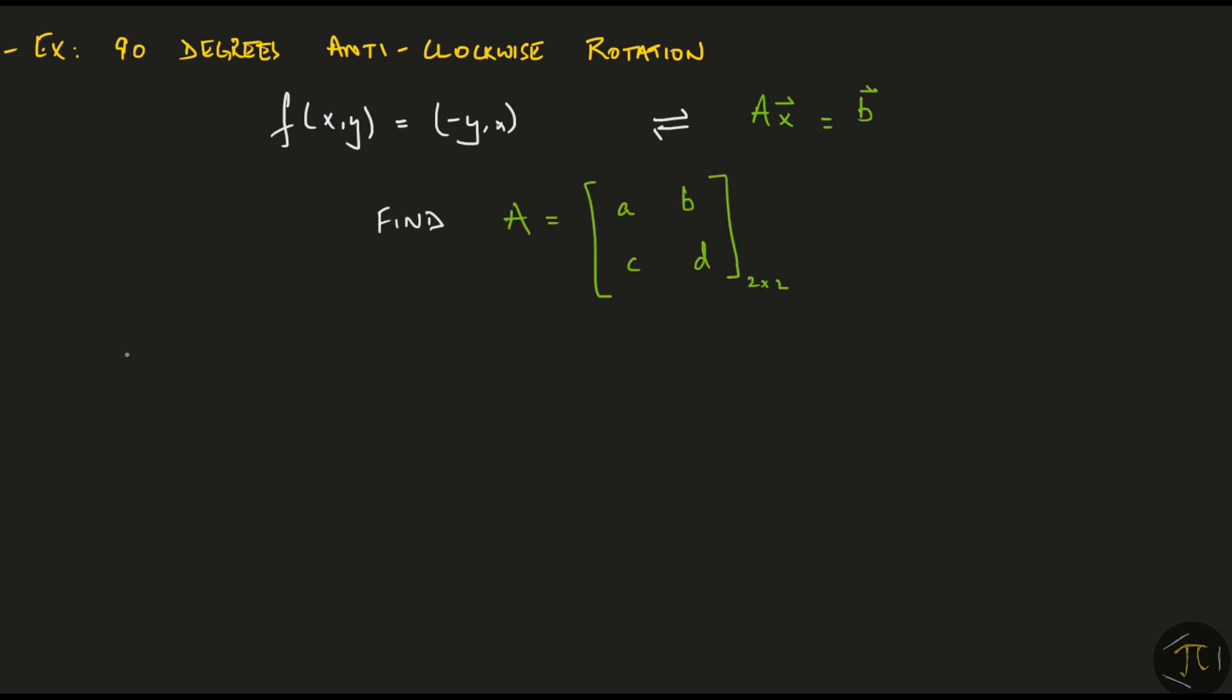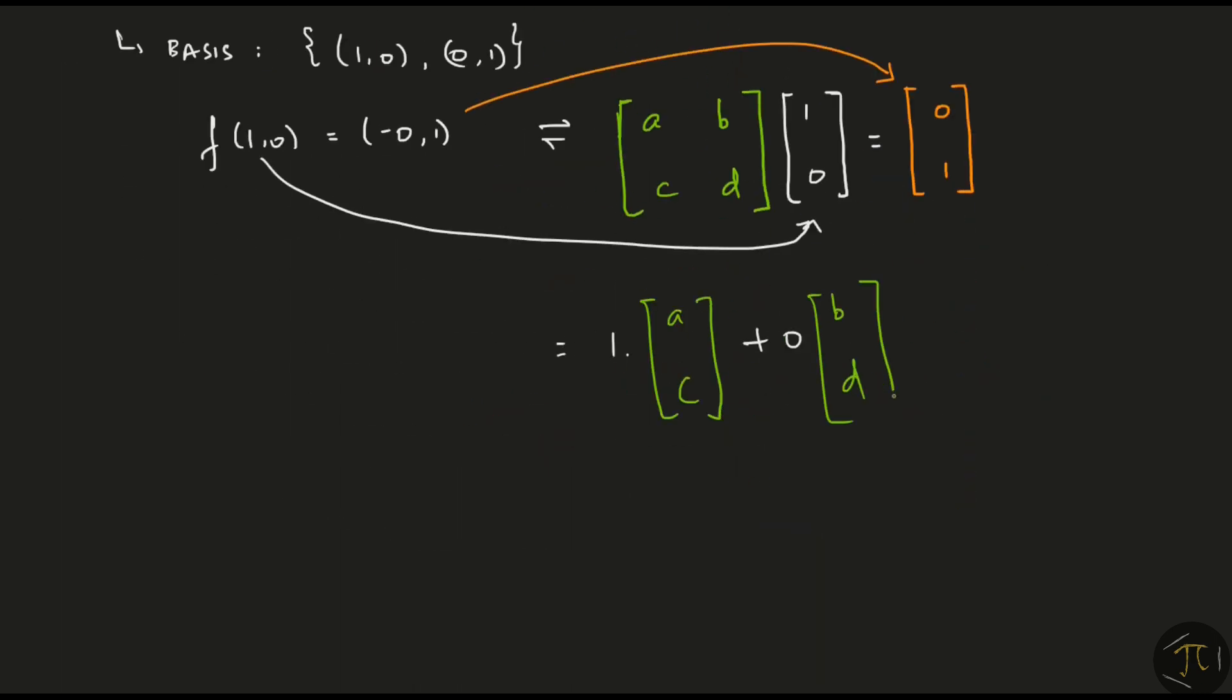We start by defining the basis for the input and output spaces. Then we look at where the function takes the first basis vector. So I want the product of this matrix and one zero to produce zero one. Now I perform the matrix vector multiplication and I find that the vector ac is equal to zero one which implies that a is zero and c is one.